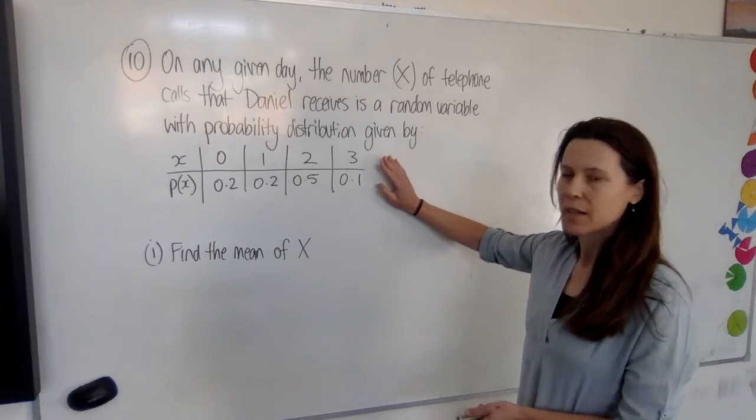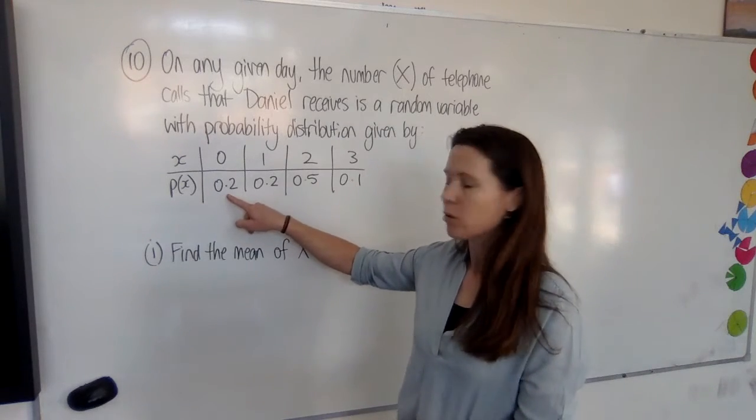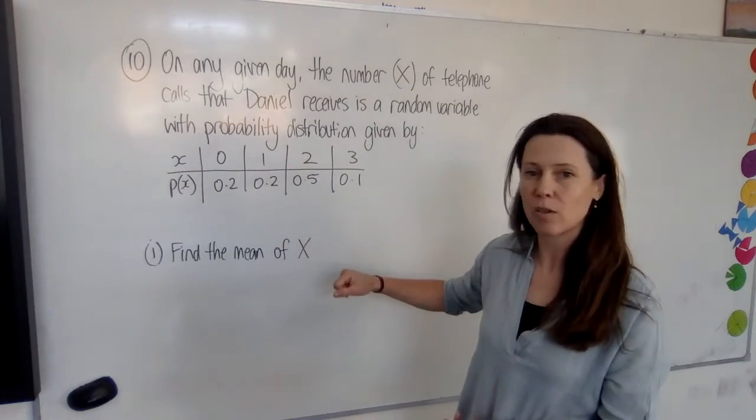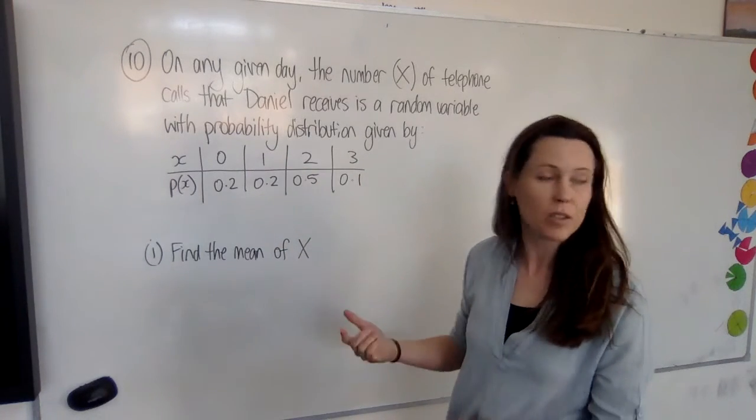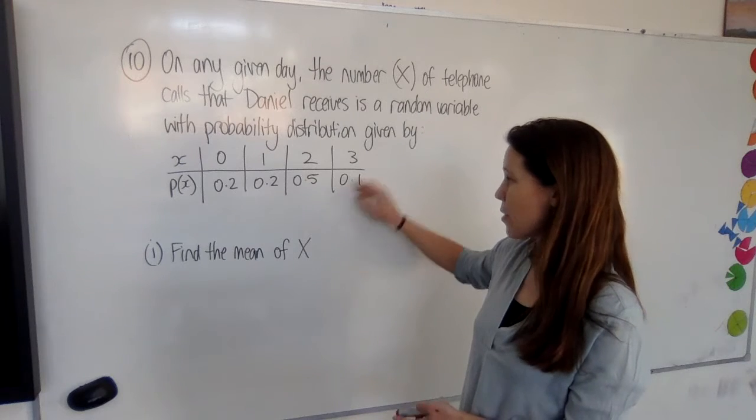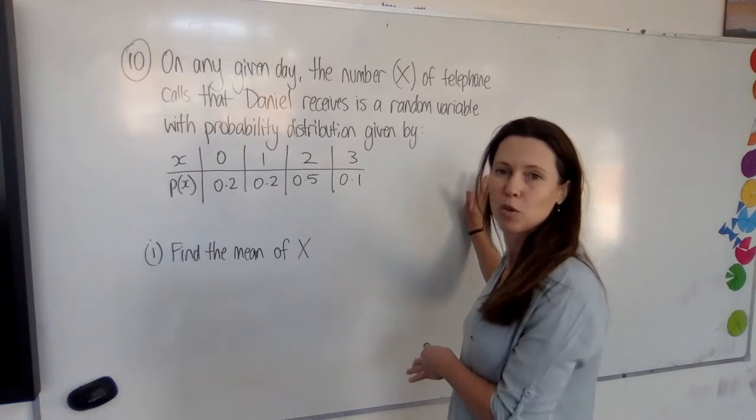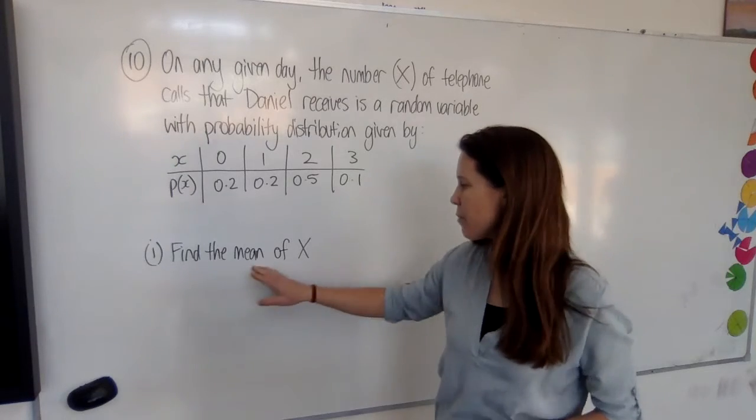Now just think about what this means. It means that 0.2 or two tenths of the time he doesn't get any calls. 0.2 of the time he gets one call, half the time he gets two calls, and one tenth of the time he gets three calls. According to this, he never gets four or more calls. Now, find the mean of X.